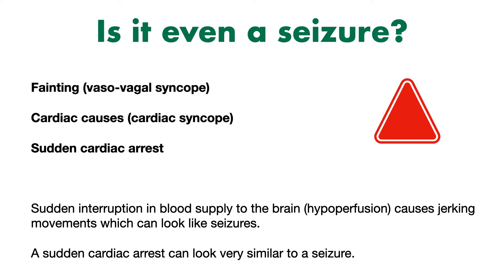There are a couple of medical problems that can cause a sudden reduction in blood supply to the brain. Probably the most common is a simple faint, or vasovagal syncope. Syncope just means a temporary loss of consciousness. Some patients who experience a faint may show these jerking movements, which can be mistaken for a seizure. Another cause of syncope, or loss of consciousness, is a problem with the heart — cardiac causes.